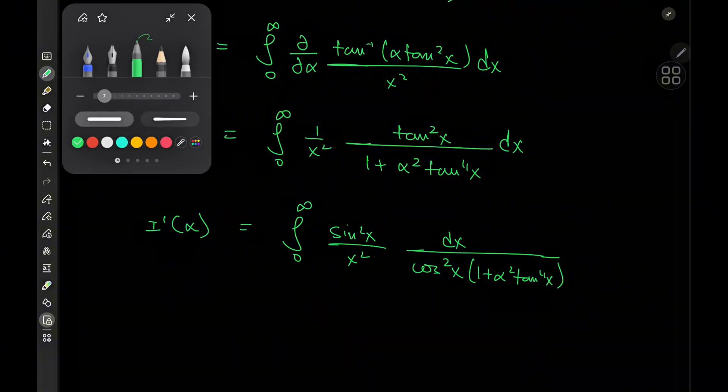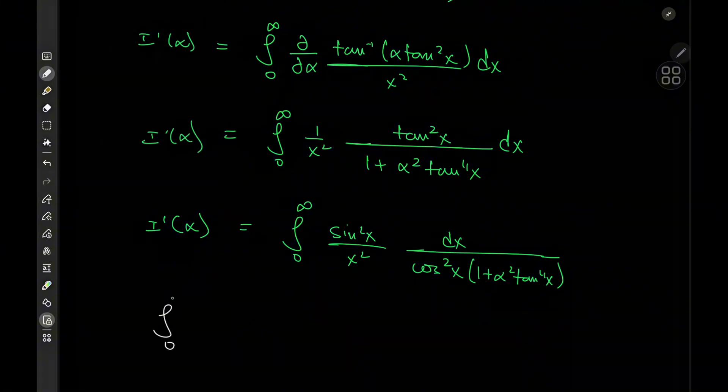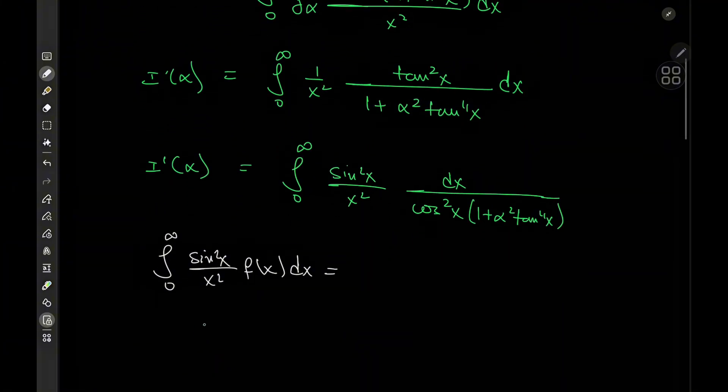Anyway, so if you have the following structure, that is the integral from zero to infinity of sine squared x over x squared times f of x dx, where, by the way, f of x is even. So f of x here equals f of negative x. And we have f of x plus or minus pi equal to f of x. In other words, f is pi periodic. In that case, the integral sorts out to the integral from zero to pi over two of simply f of x dx.